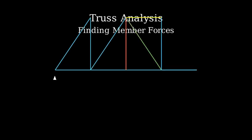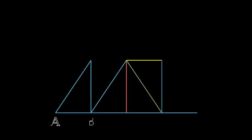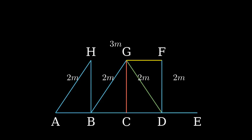Let's start by examining our truss. The truss spans 8 meters horizontally, with members spaced every 2 meters. It has a height of 3 meters at its peak.